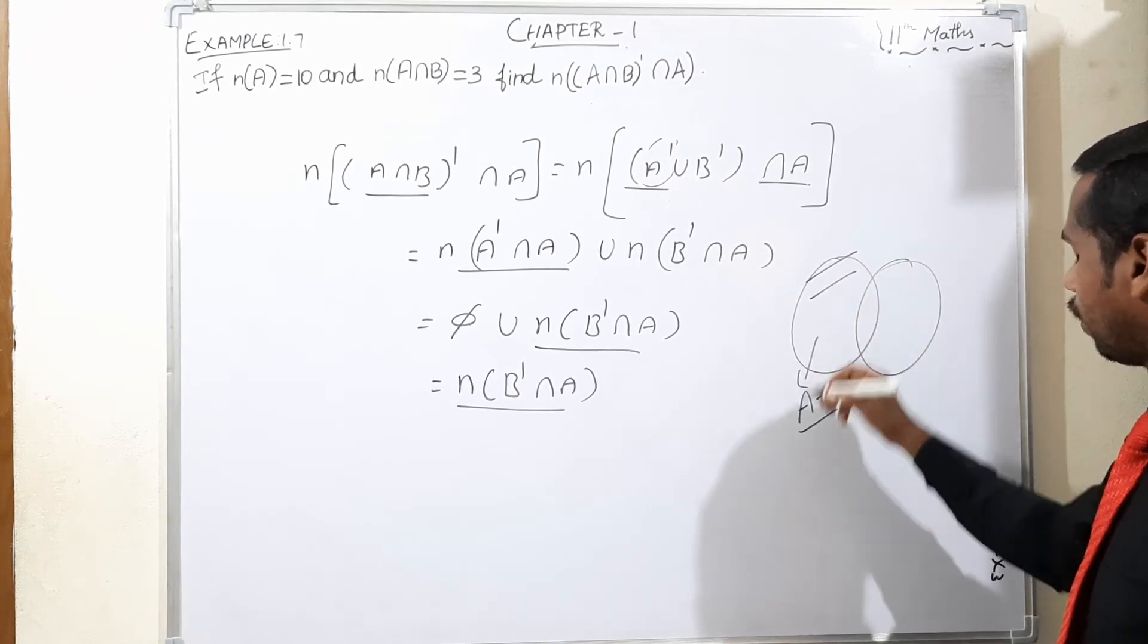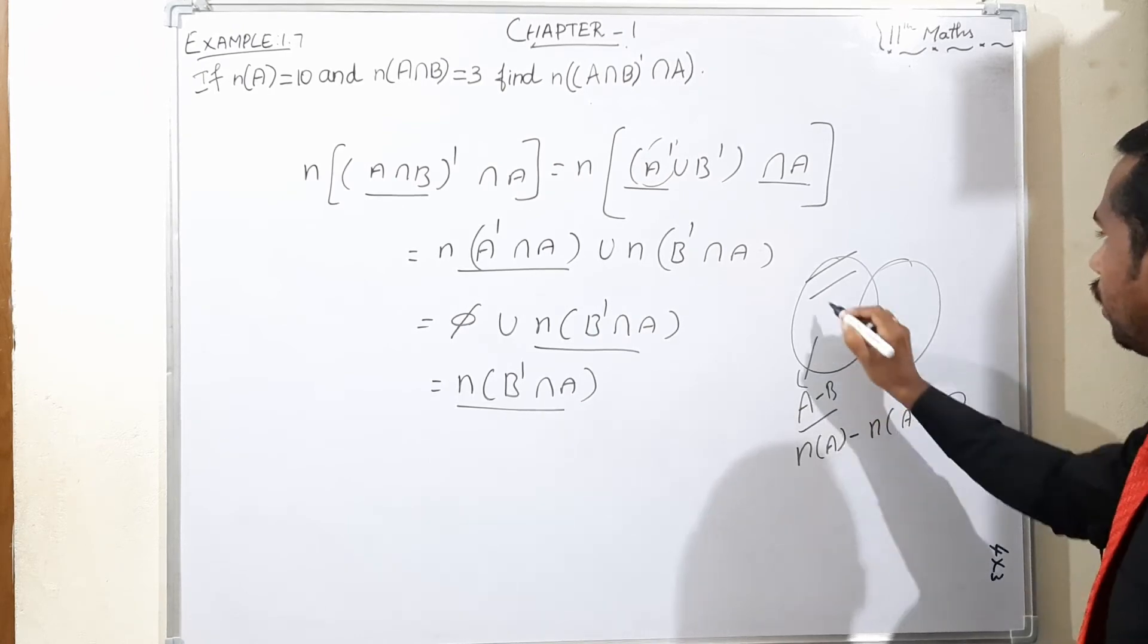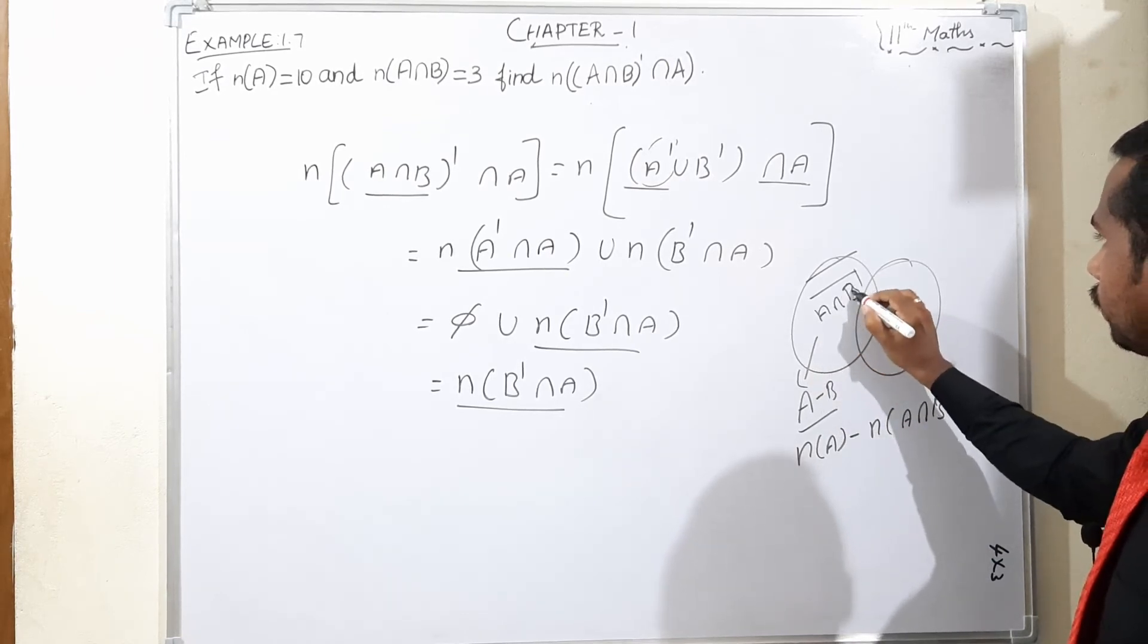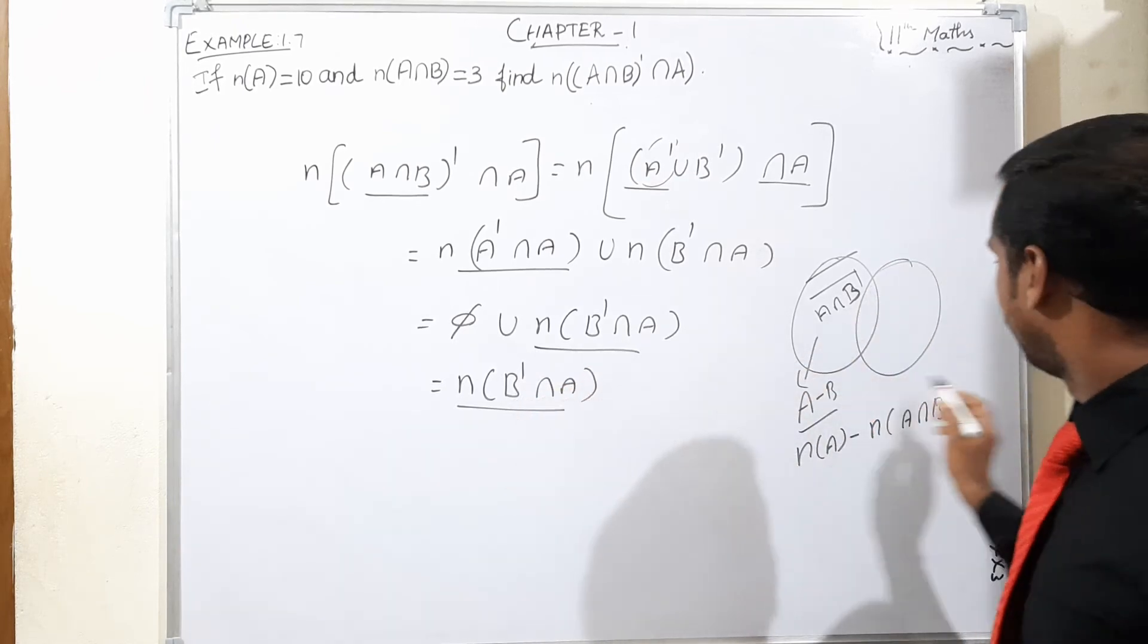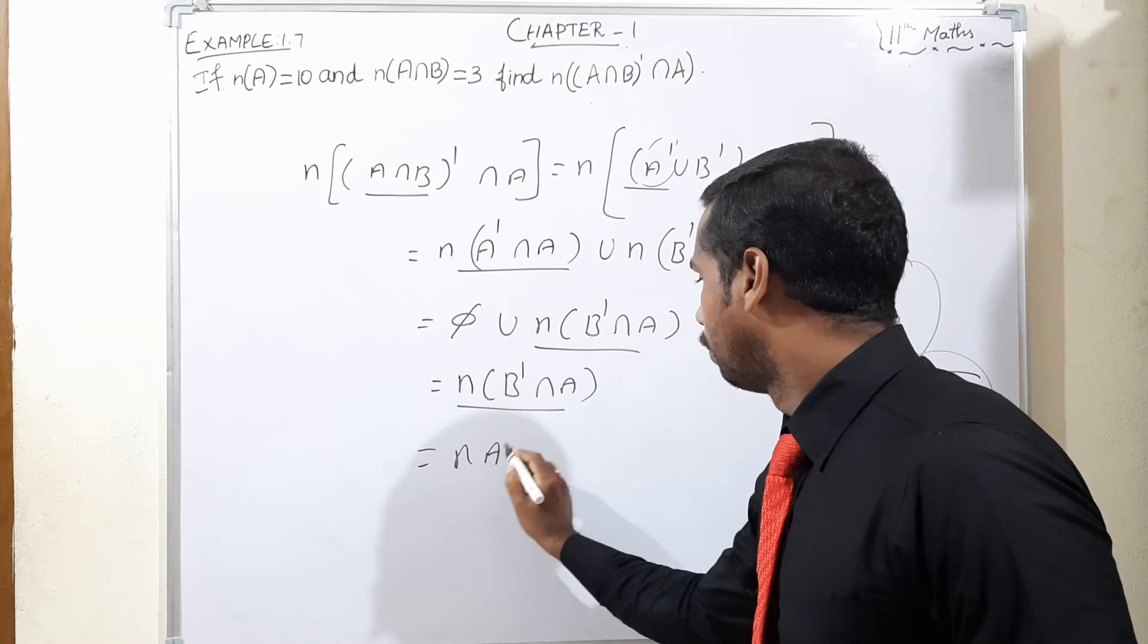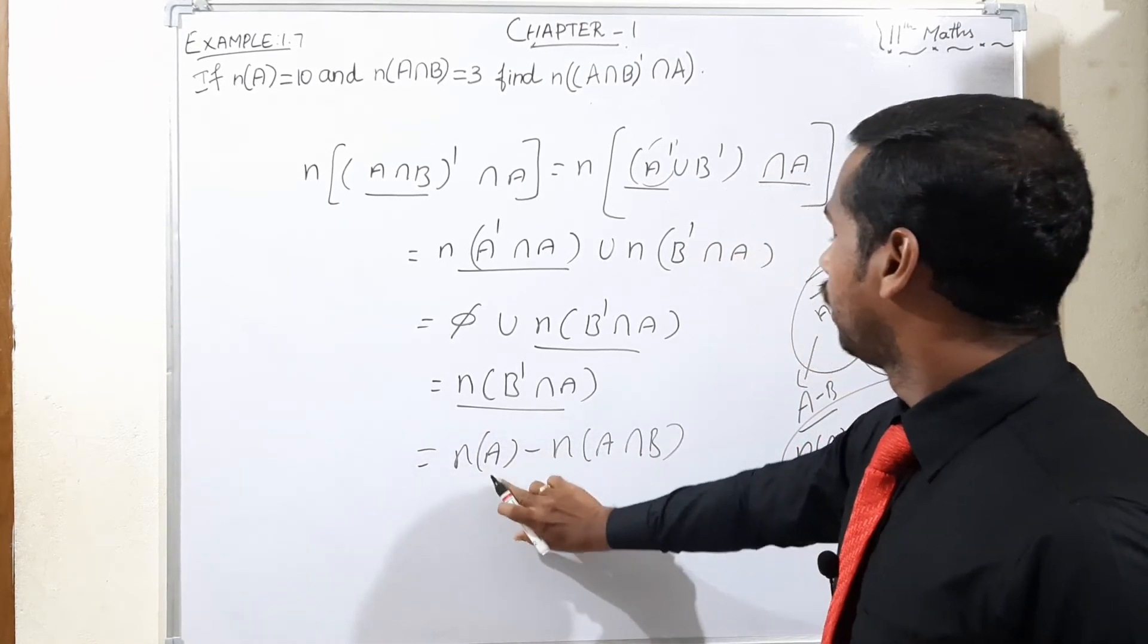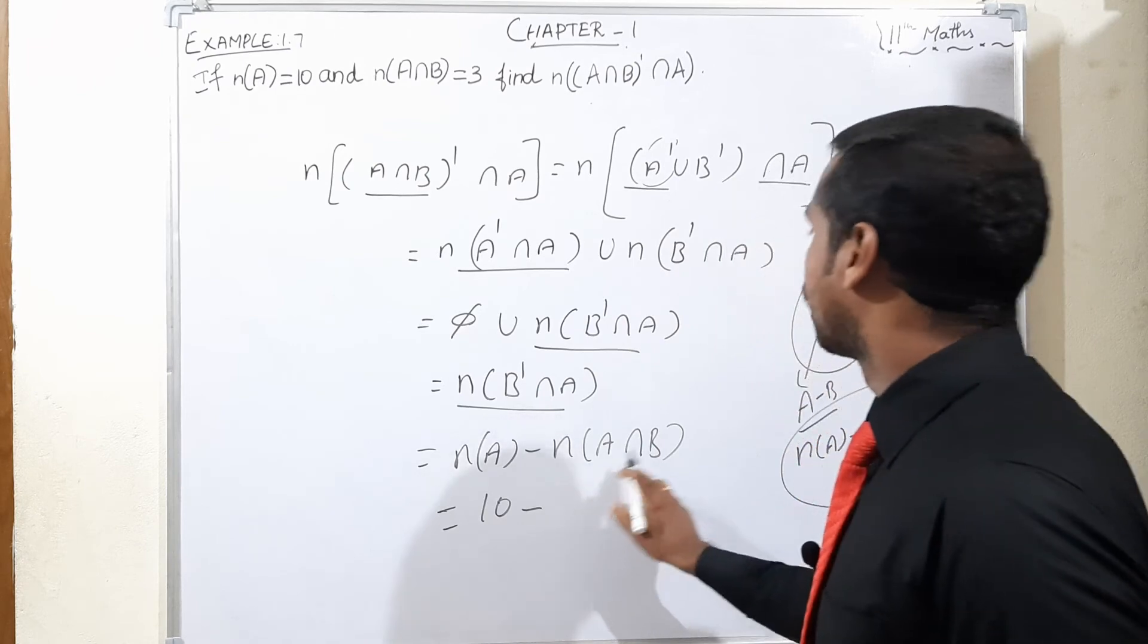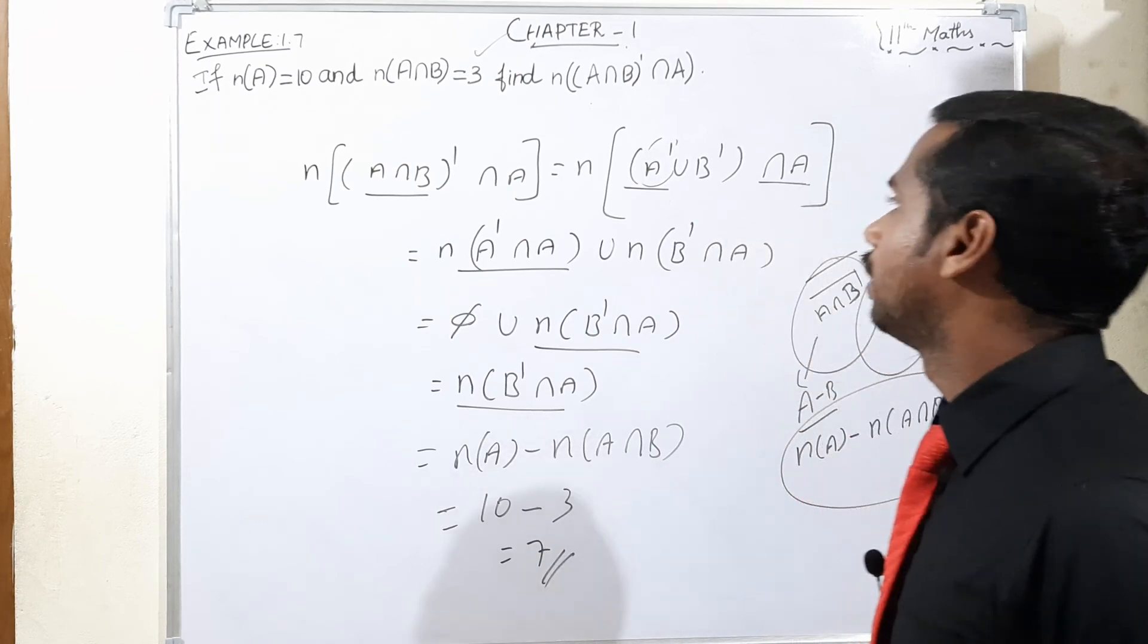The number of B' intersection A equals n(A) minus n(A∩B). We have two values: n(A) is 10 and n(A∩B) is 3. So 10 minus 3 equals 7.